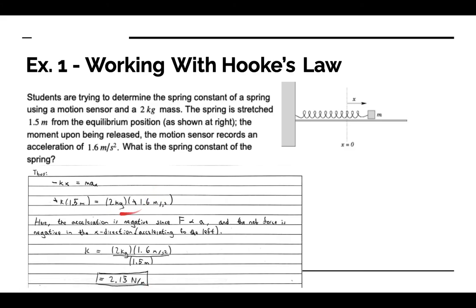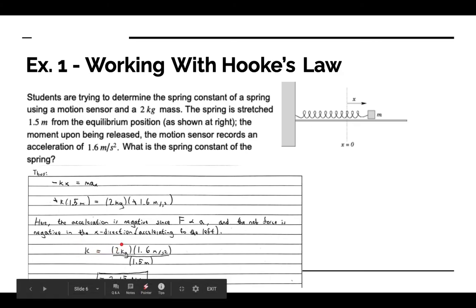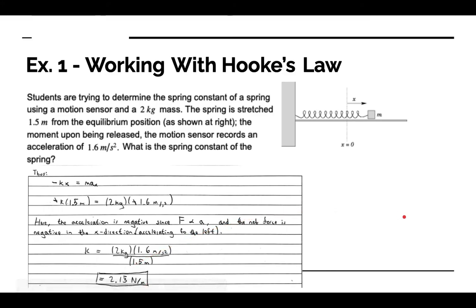Solving for k gives: k = (2 kg × 1.6 m/s²) / 1.5 m = 2.13 newtons per meter. Since k is a constant, we expect a positive number, which is why the negative signs must cancel out. This is our introduction to Hooke's Law. In section 5.2, we'll look at how Hooke's Law generalizes from a spring to any scenario where it applies, and use that to define what simple harmonic motion is.